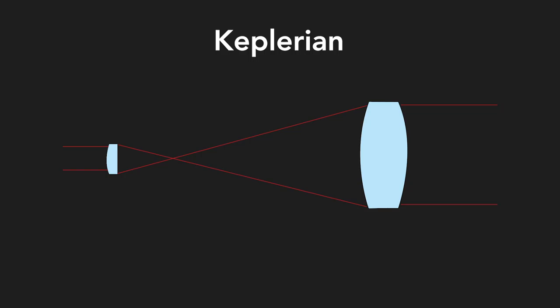Keplerian beam expanders feature a basic design. These beam expanders require at least two positive lenses in series, spaced the sum of their focal lengths apart to focus the beam to a point, and then expand the beam as it starts to diverge beyond the focal point.